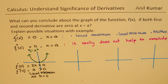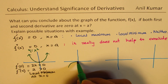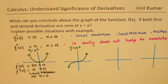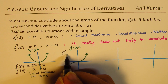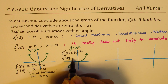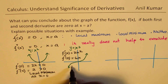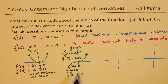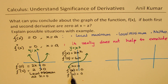Now let's take another example: the graph of y equals x cubed. The first derivative f'(x) equals 3x squared, and the second derivative equals 6x. At x equals 0, f'(0) equals 0 and the second derivative is also 0. Since both are 0, we know it is a point of inflection — we cannot conclude from the derivatives alone.